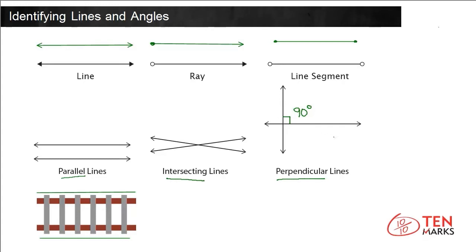An example is intersecting streets. You can see these streets intersect and form an L-shaped or 90-degree angle.